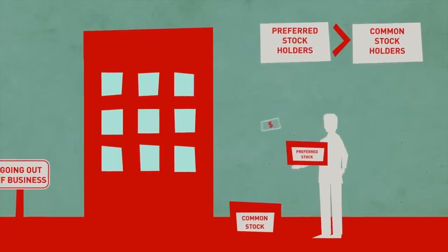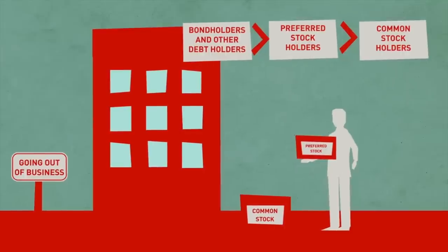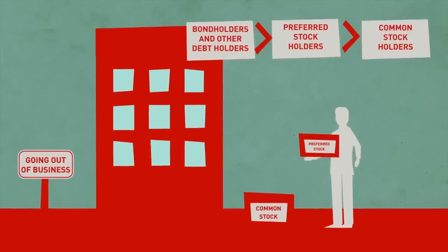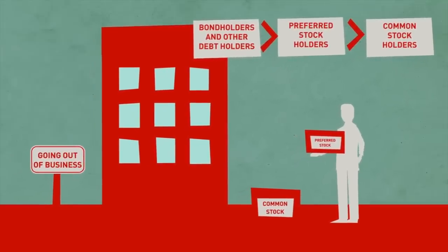Preferred shareholders receive their dividends first and take precedence in collecting remaining assets if the company is liquidated. Of course, bond and other debt holders ultimately trump both types of stock in terms of priority level for liquidation purposes.